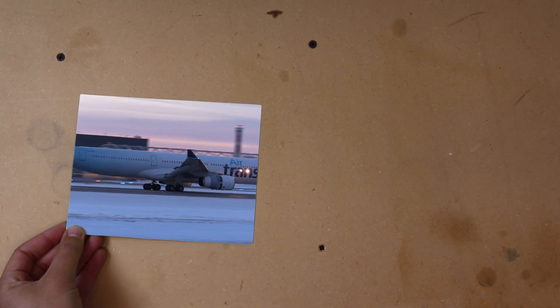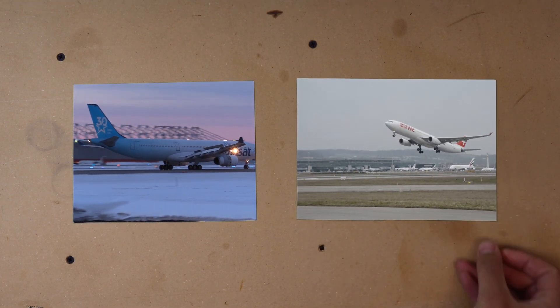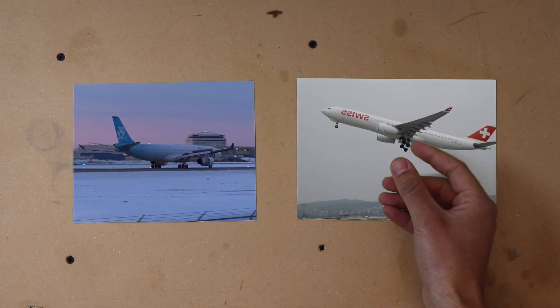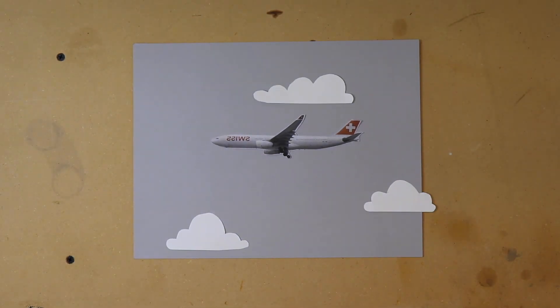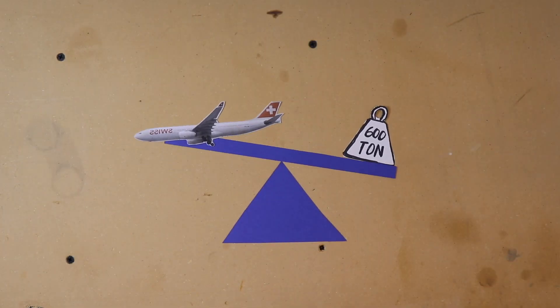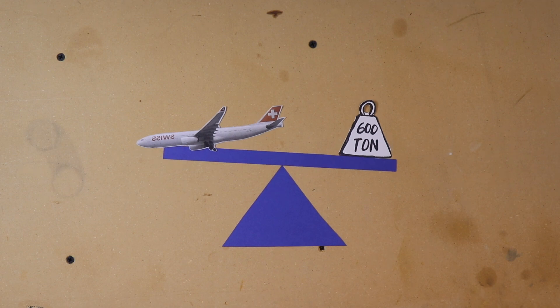So chances are you've seen an airplane. You may have even traveled somewhere in one, but have you ever wondered how an airplane keeps itself in the air? A modern airplane can weigh upwards of 600 tons, so how does it not just fall out of the sky?